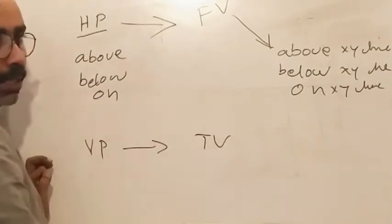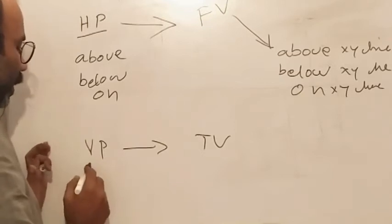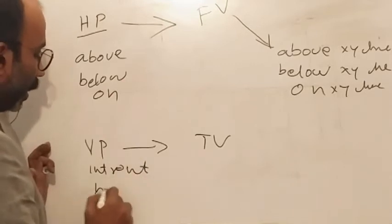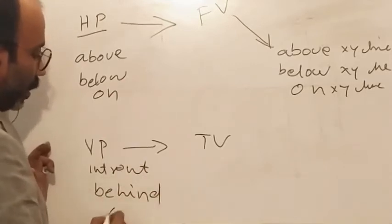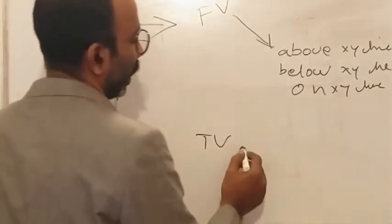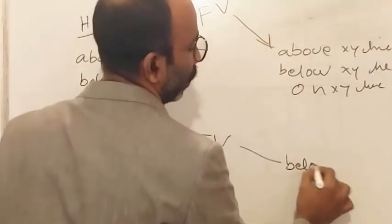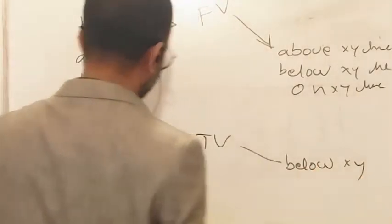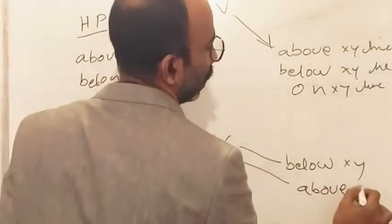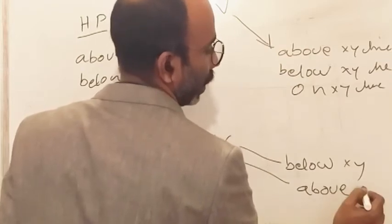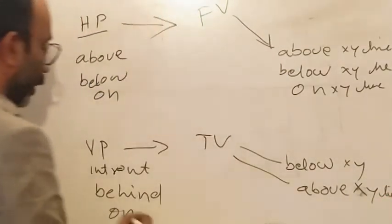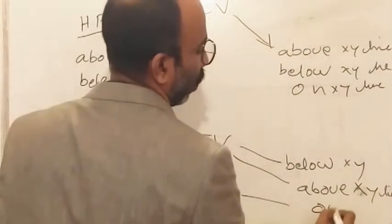VP relation is used to draw the top view. In the case of VP, there are three relations: in front, behind, and on. If it is in front, then the top view is below XY line. If it is behind, then the top view is above XY line. And if it is on, then it is on XY line.